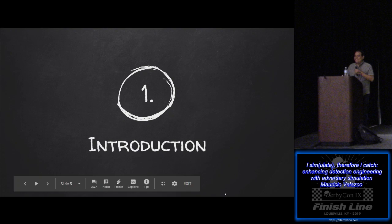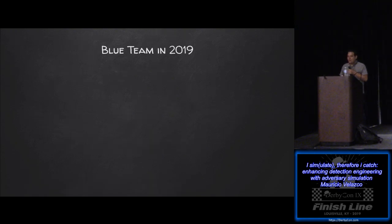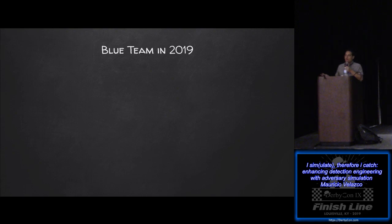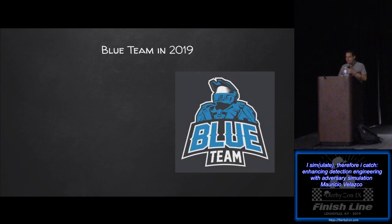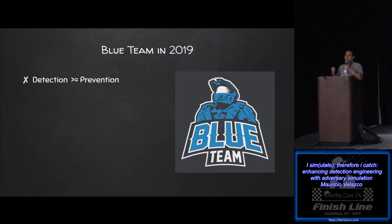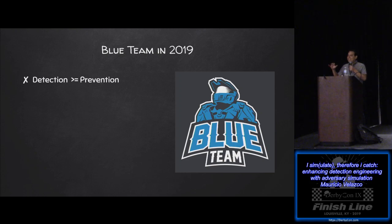I wanted to start this talk by discussing where we are as a blue team in 2019. First — go blue team. In 2019, the blue team understands that prevention has fallen short. There's no one single tool that is going to stop all the attacks. As much as machine learning, AI, and deep learning try, it just doesn't work. And we understand that we need to be improving detection.